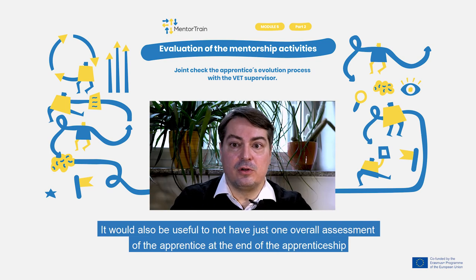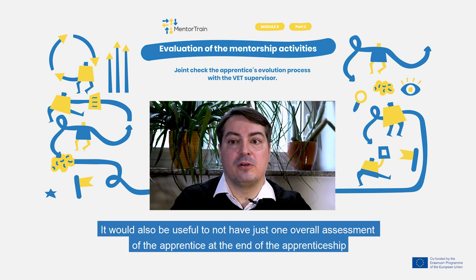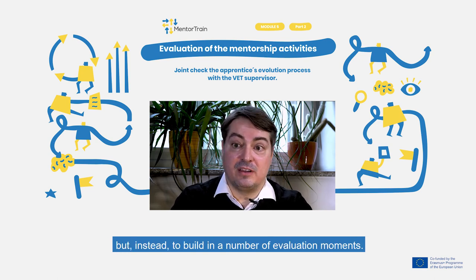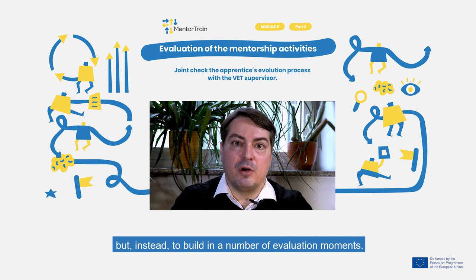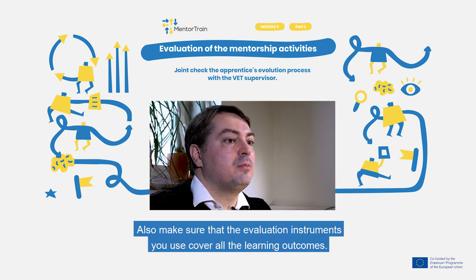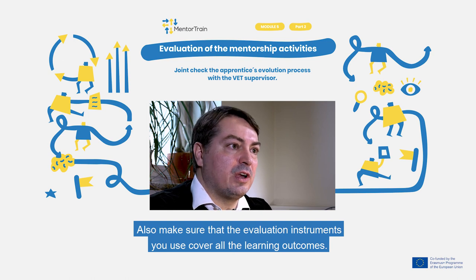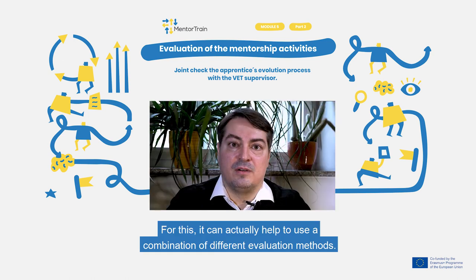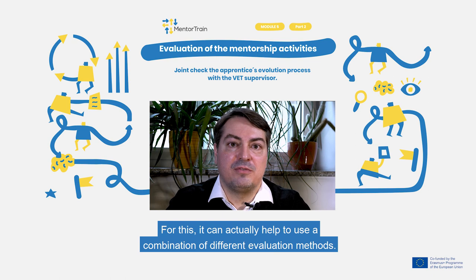It would also be useful to not have just one overall assessment of the apprentice at the end of the apprenticeship, but instead to build in a number of evaluation moments. Also, make sure that the evaluation instruments you use cover all the learning outcomes. For this, it can actually help to use a combination of different evaluation methods.